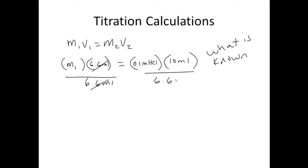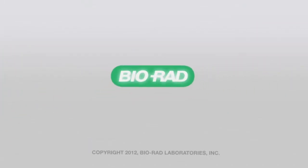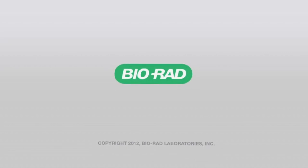Divide this by 6.6 mils. So this would be M1 equals 0.1 molar HCl times 10 mils divided by 6.6 mils, which gives us 0.119 molar.